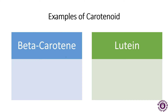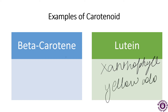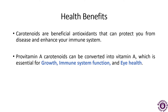Lutein is a xanthophyll found in green leafy plants and is a yellow-colored pigment. It gives yellow color to egg yolk and yellow carrots. Like all carotenoids, it is synthesized in plants, and animals can store the pigment in fat. Recent studies have shown that lutein may have some function in the human eye. Diseases like macular degeneration may be caused by the body's inability to incorporate and use carotenoids like lutein.